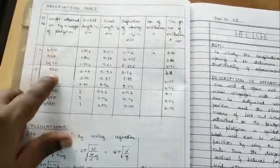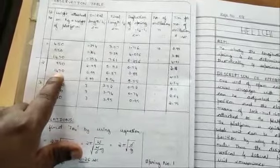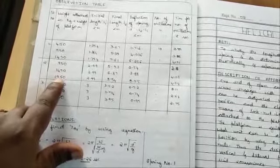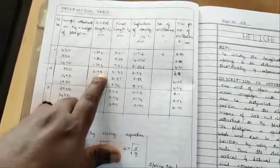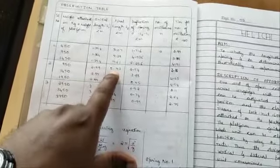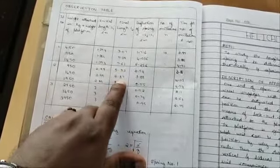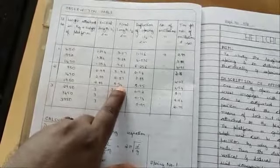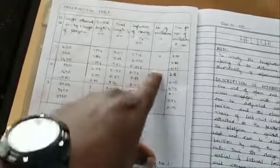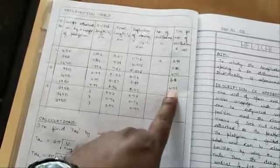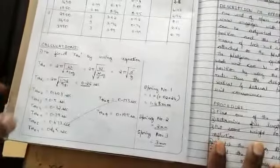We have taken three trials: for the first trial the weight was 950 grams, for the second trial 1450 grams, and for the third trial 1950 grams. The initial length was the same at 2.99 cm. As we added weight, the final length varied — for the first trial it was 5.53 cm, for the second 6.87 cm, and for the third 8.54 cm. The deflection delta equals final length minus initial length. Number of oscillations is standard at 10, and the time taken depends upon the weight added.